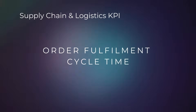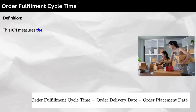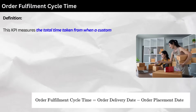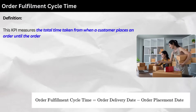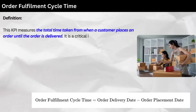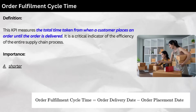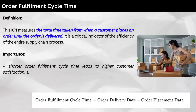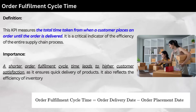1. Order Fulfillment Cycle Time. Definition: this KPI measures the total time taken from when a customer places an order until the order is delivered. It is a critical indicator of the efficiency of the entire supply chain process. Importance: a shorter order fulfillment cycle time leads to higher customer satisfaction as it ensures quick delivery of products. It also reflects the efficiency of inventory management, production scheduling, and logistics.